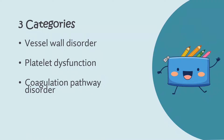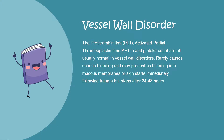There are three main categories that can lead to coagulation issues. These comprise of: number one, vessel wall disorders; number two, platelet dysfunction; number three, coagulation pathway disorders. We'll be looking in detail into each one of these.